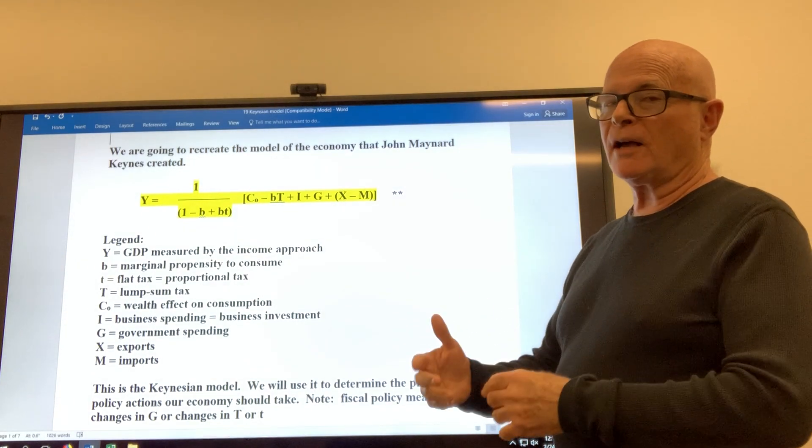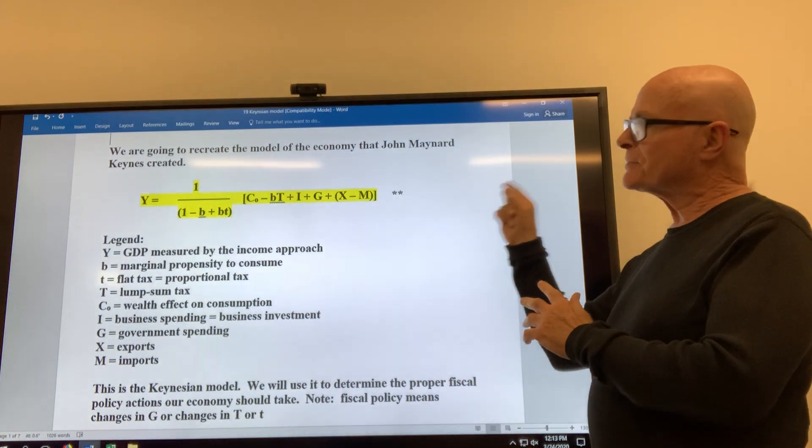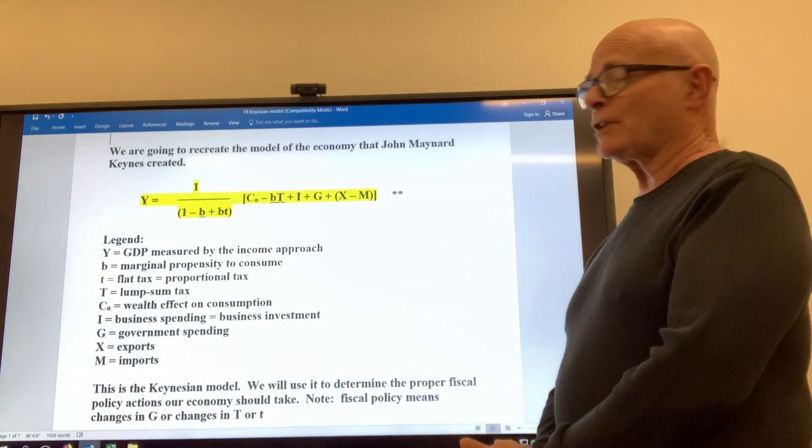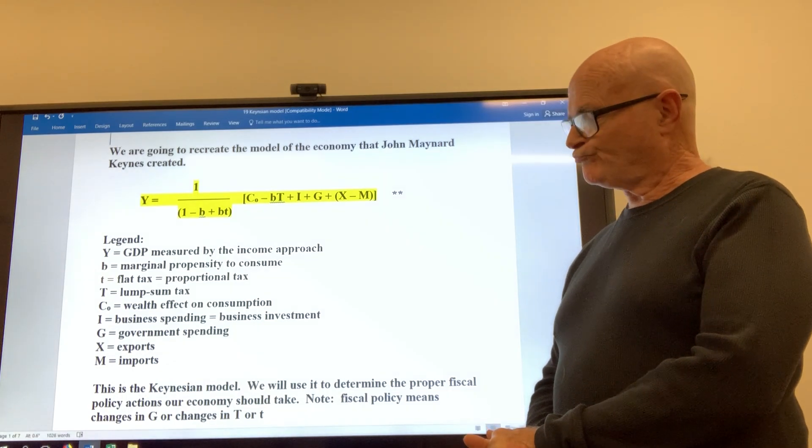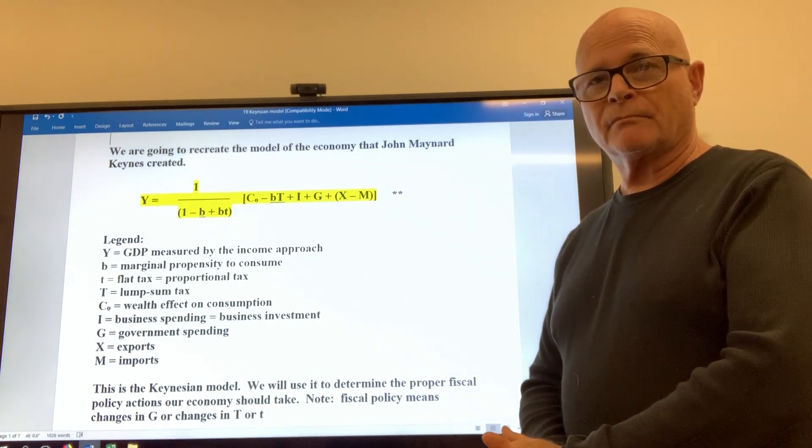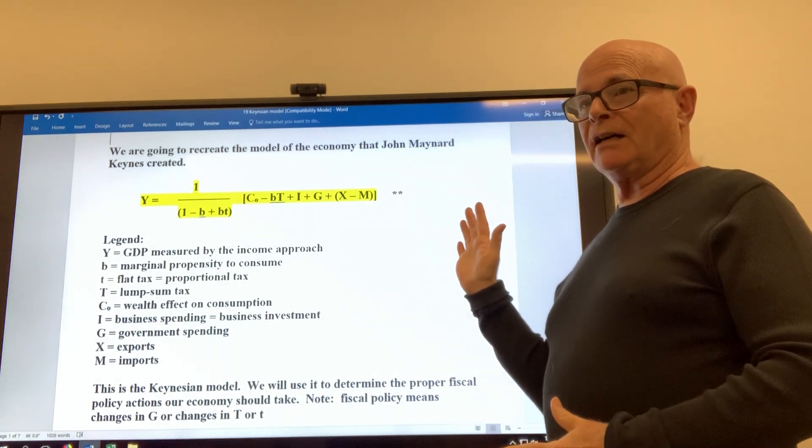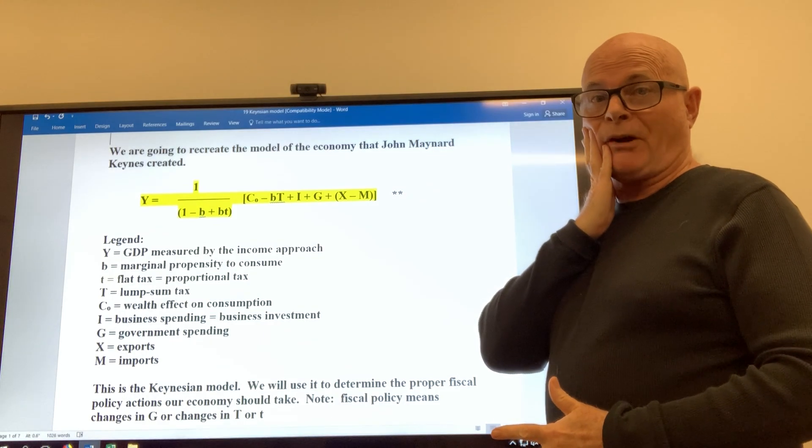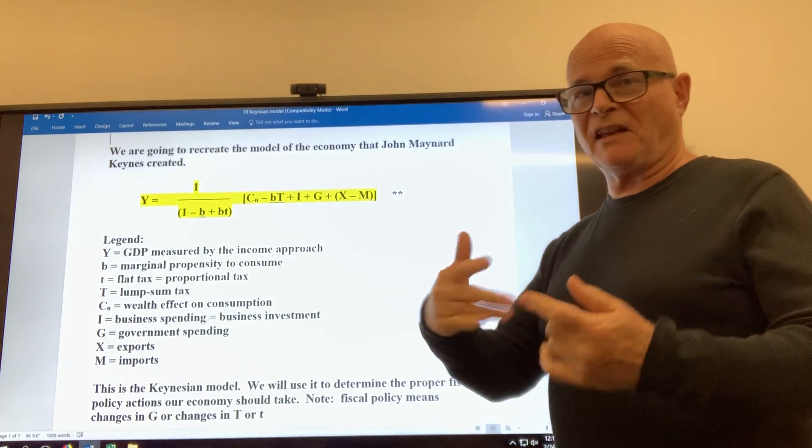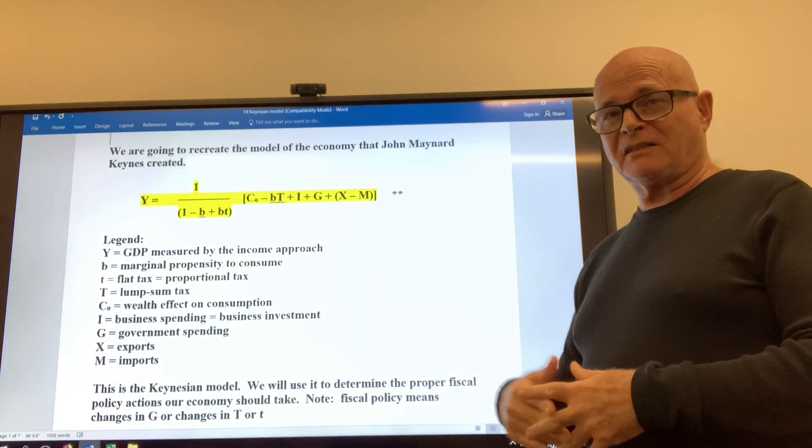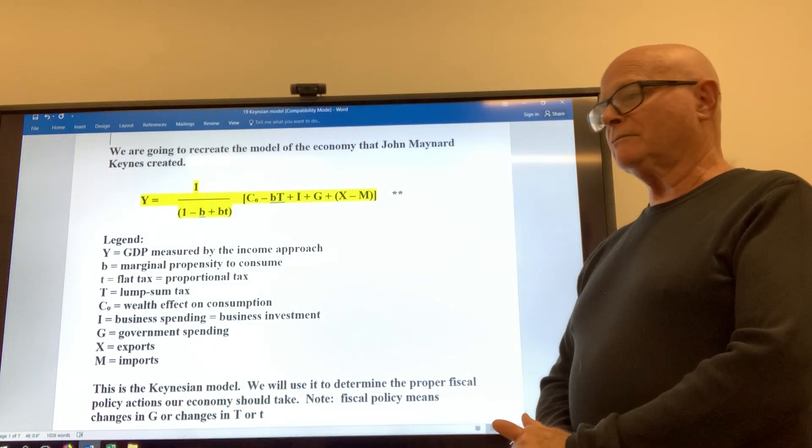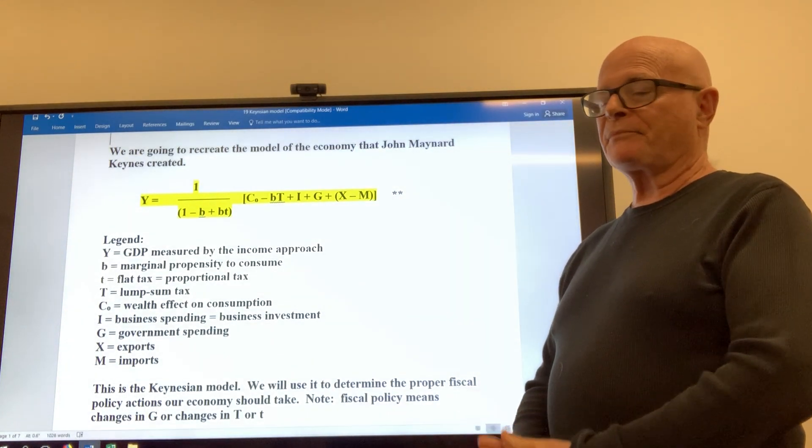Now the problem with this for Keynes is if you asked him, great John Maynard, how many dollars should we spend, say, to lower the unemployment rate by one percent, he would have said, I don't know. Why don't you spend some and see if it's enough? And if it's not, spend some more. And if it's too much, then stop spending. Okay, well I mean that's better than nothing, however...